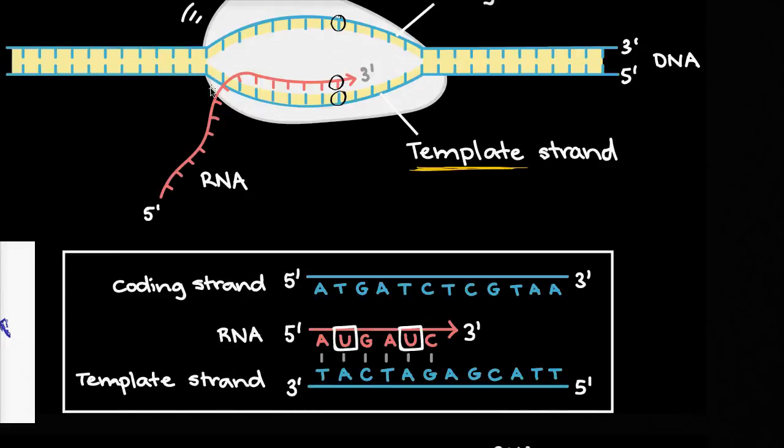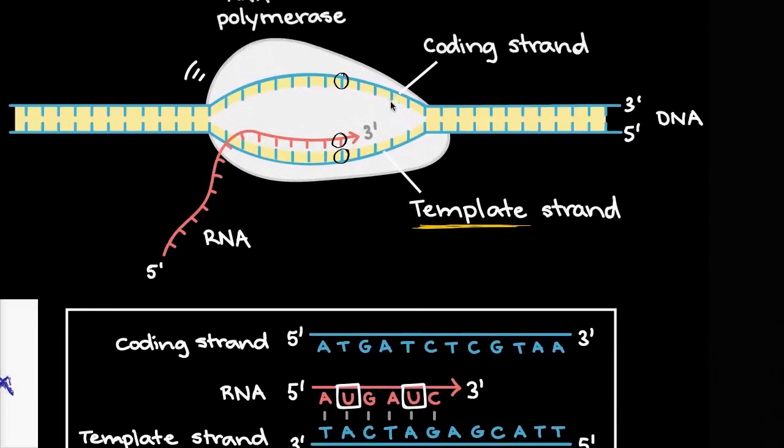So once again, this bottom strand is acting as a template, but the resulting RNA that gets coded is essentially going to have the same information that we had in the coding strand.